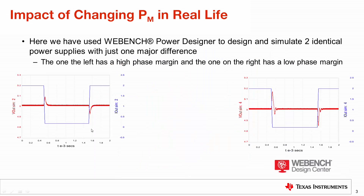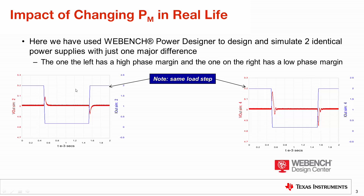If I go to my next plot, you can see that I have designed a power supply with exactly the same load step. These are two different power supplies with two different phase margins. The load step is going from around 2 amps down to near 0 amps, and you can see that on one of them you've got no oscillations and on one of them you've got more oscillations.